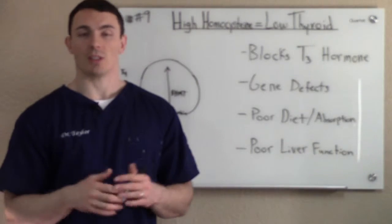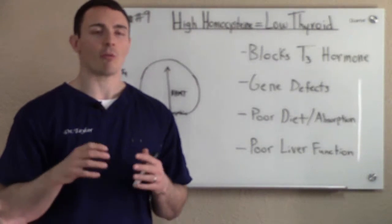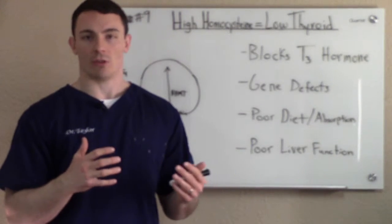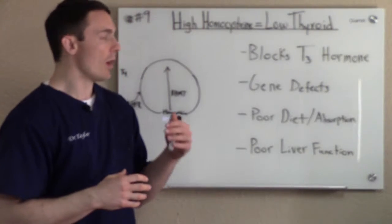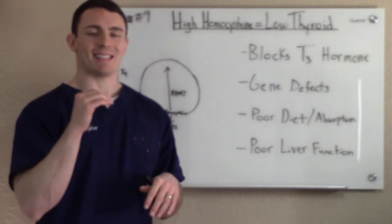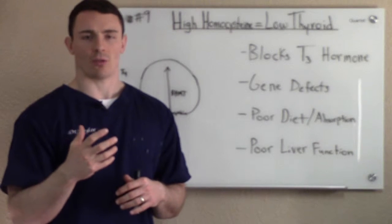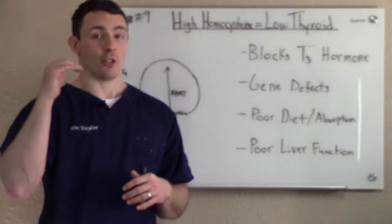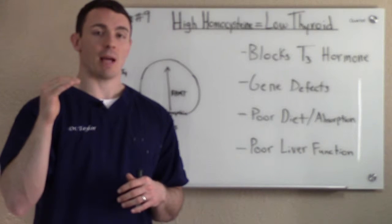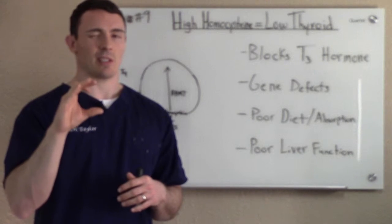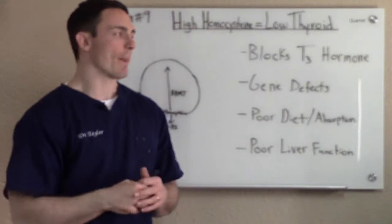So what is homocysteine? Homocysteine is just a byproduct of protein metabolism, so everybody has homocysteine in their system. What matters is the level of homocysteine. Functionally, we like to see between seven and nine. Think of homocysteine like cholesterol — you don't want it too high and you don't want it too low. That sweet spot is between seven and nine.